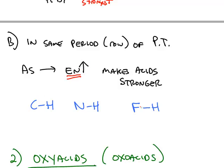So if you compare carbon, nitrogen, and fluorine, carbon to hydrogen bond, nitrogen to hydrogen bond, and fluorine to hydrogen bond, this one would be the strongest acid because there is the largest difference in electronegativity.